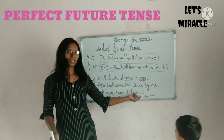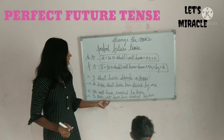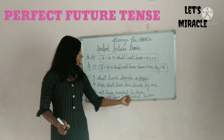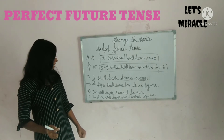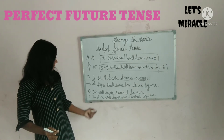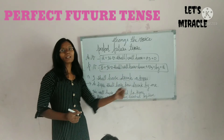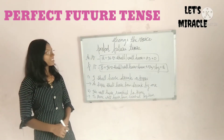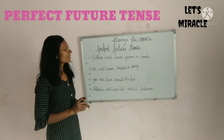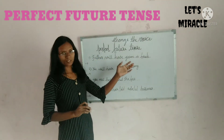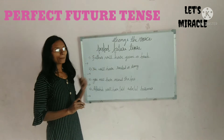He will have reached to kooning. It will become: to kooning will have been reached by him. So this way we can change the voice. Let's see some more examples about perfect future tense, changing the voice from active to passive.